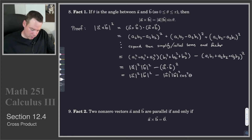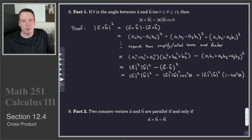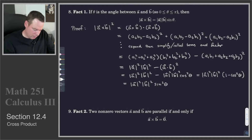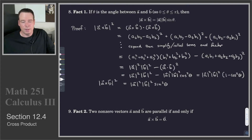Substituting and squaring the dot product expression, I push the squares onto each piece. Now I have |A|² and |B|² appearing in both terms, so I factor them out front, leaving 1 minus cos²θ inside. But 1 minus cos²θ equals sin²θ. So this boils down to |A|² times |B|² times sin²θ, and the left-hand side is the length of the cross product, squared.